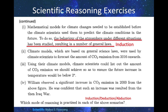Scenario two: climate models, which are based on general science laws, were used by climate scientists to forecast the amount of CO2 emissions from 2016 onwards. This is obviously deduction, because it is based on a general law and then they try to make predictions.